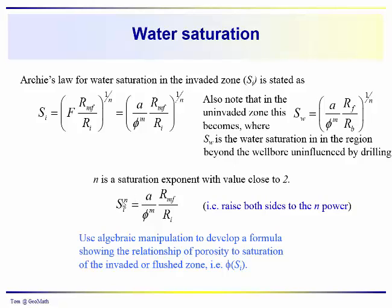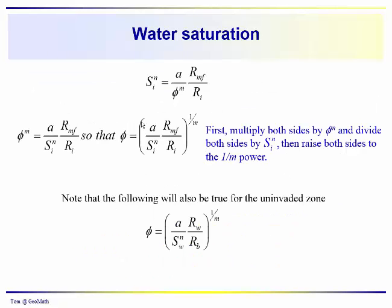So an exercise for you is to use algebraic manipulation to develop a formula showing the relationship of porosity to saturation of the invaded or the flushed zone. In other words, rearrange this equation and solve it for the porosity. We're going to multiply both sides by phi to the m power. We're going to divide both sides by the saturation in the invaded zone raised to the nth power. So take a moment and work through that.